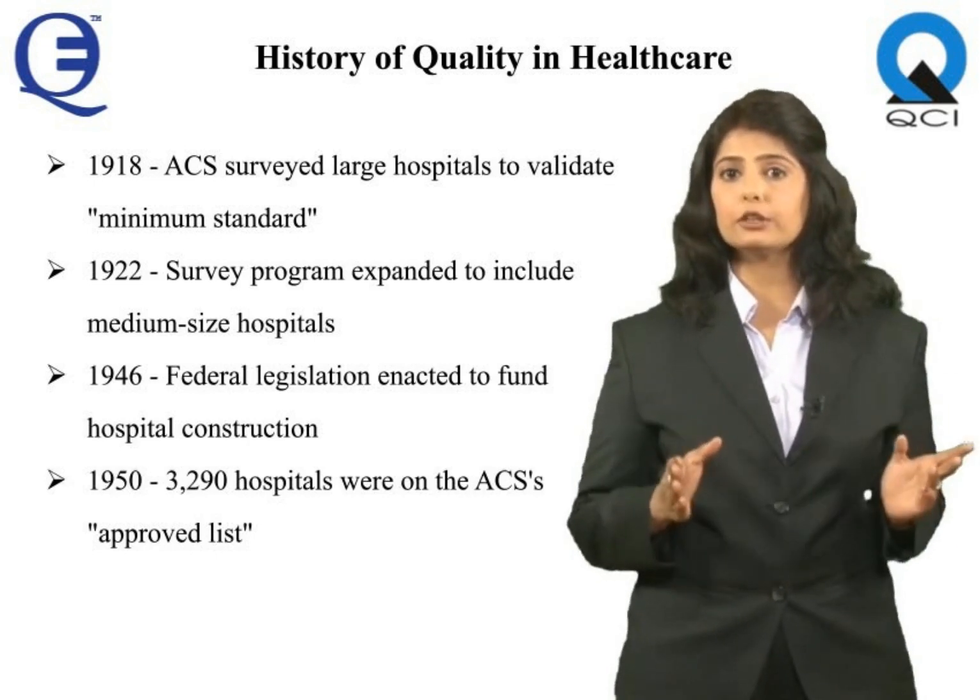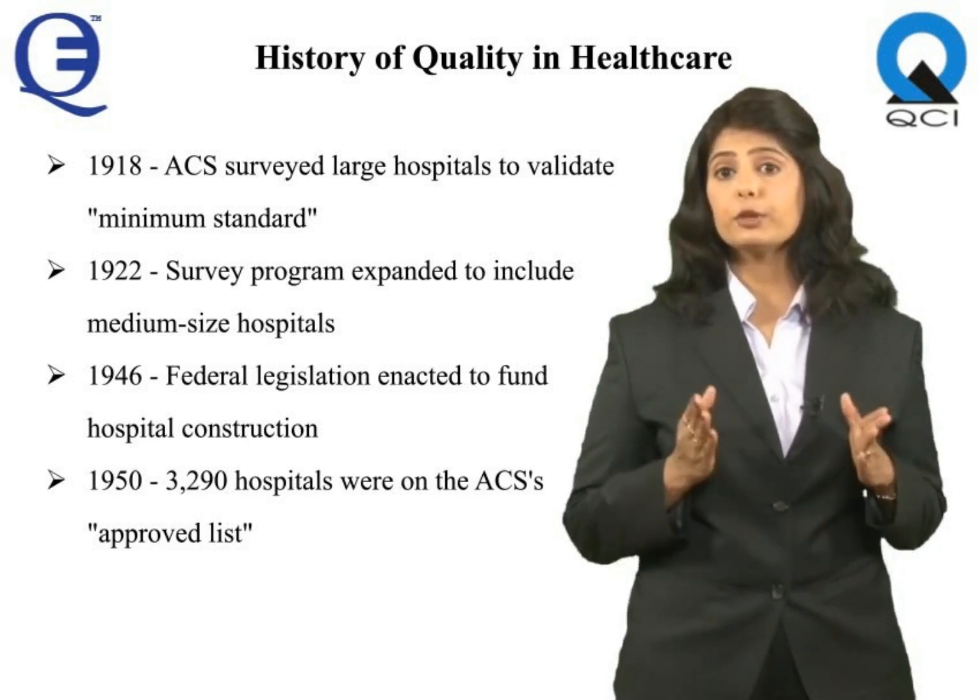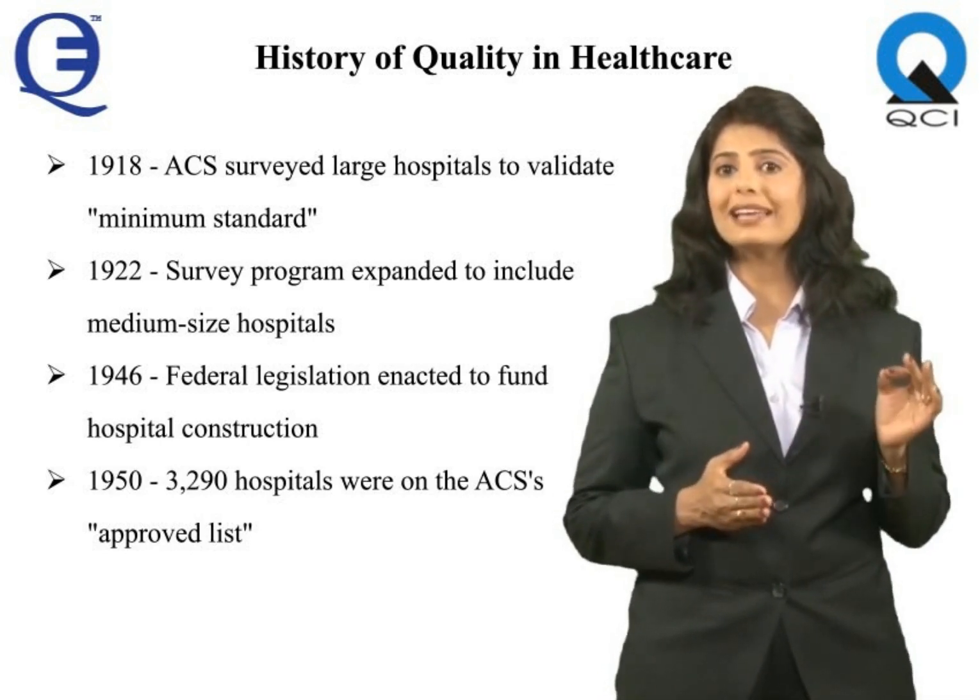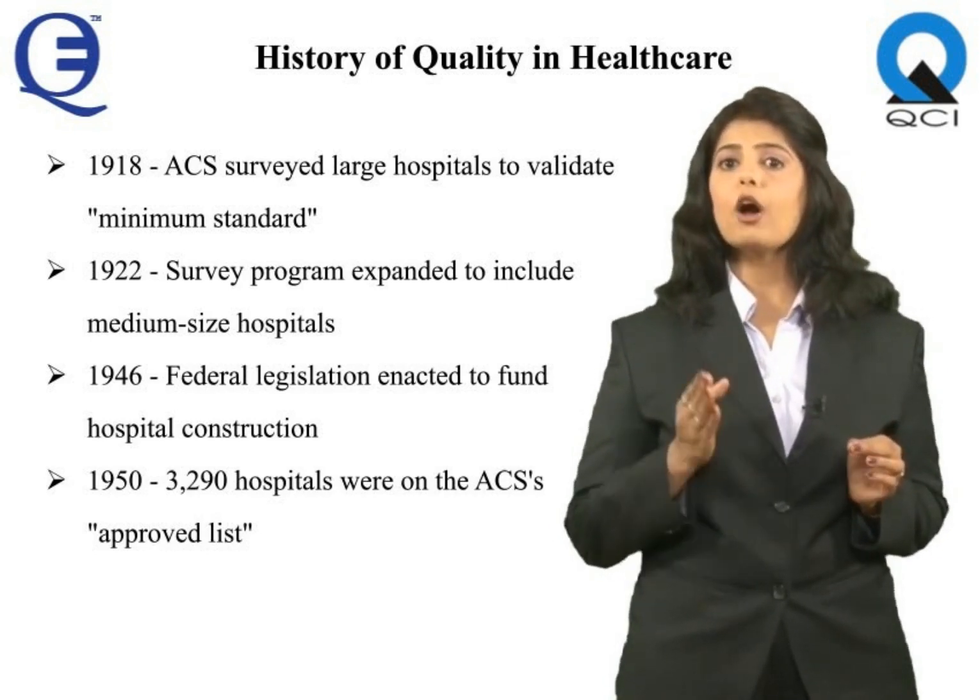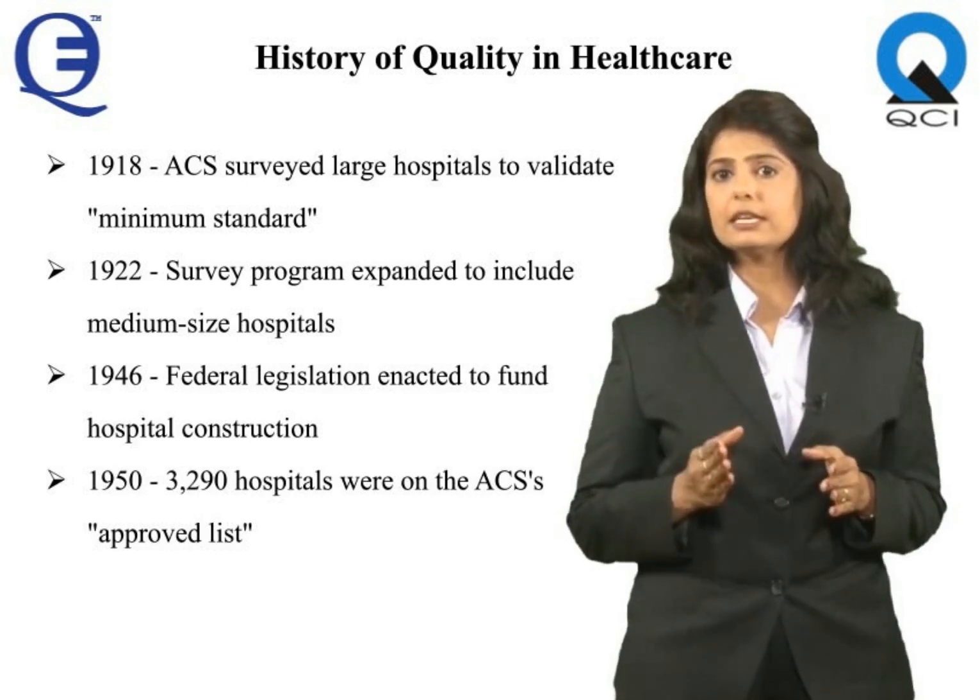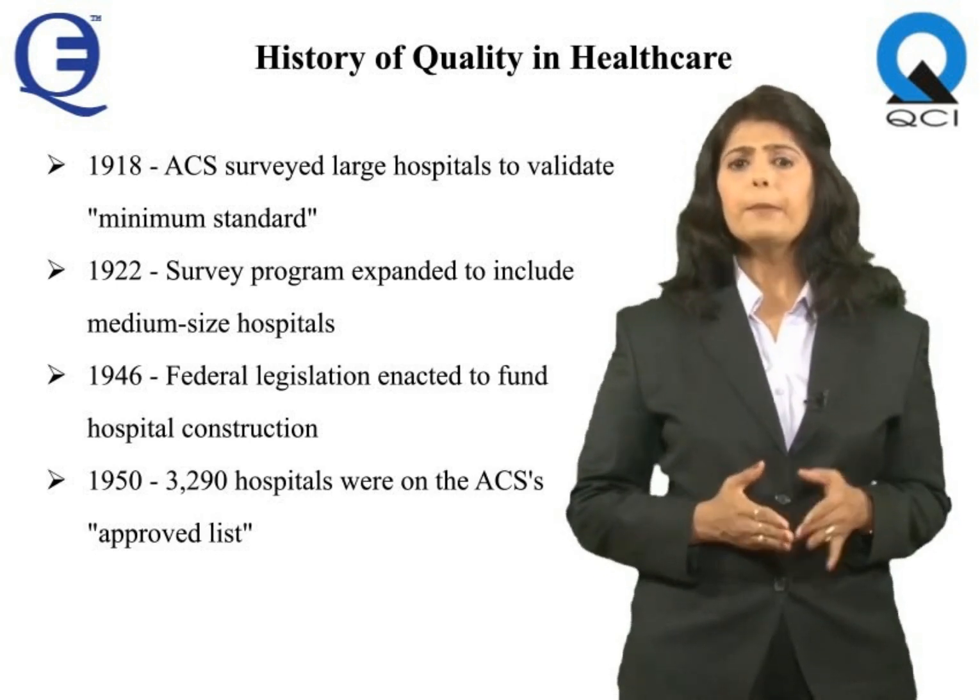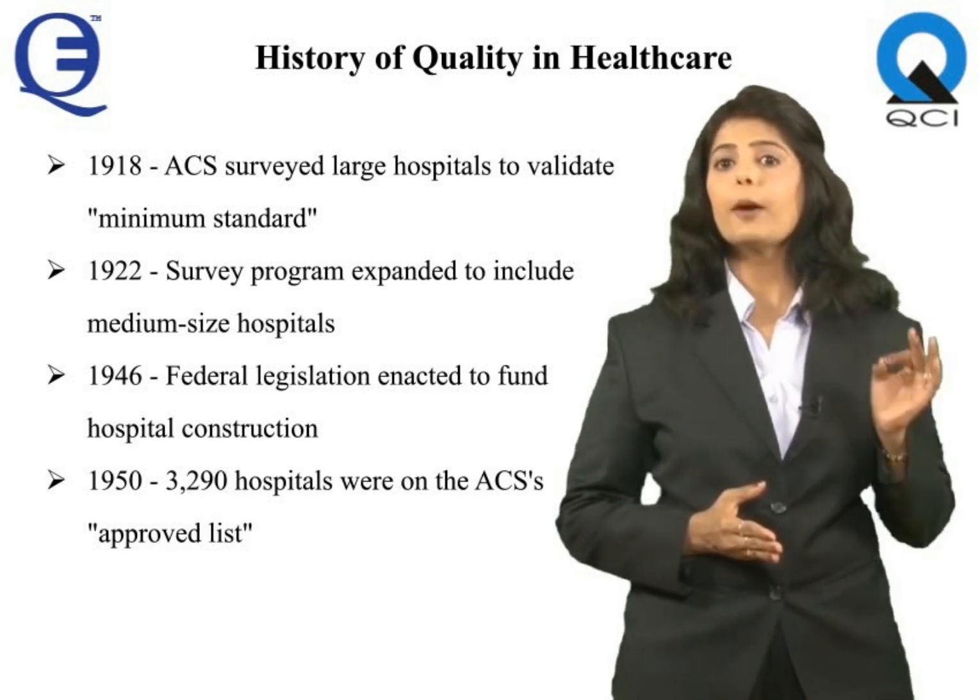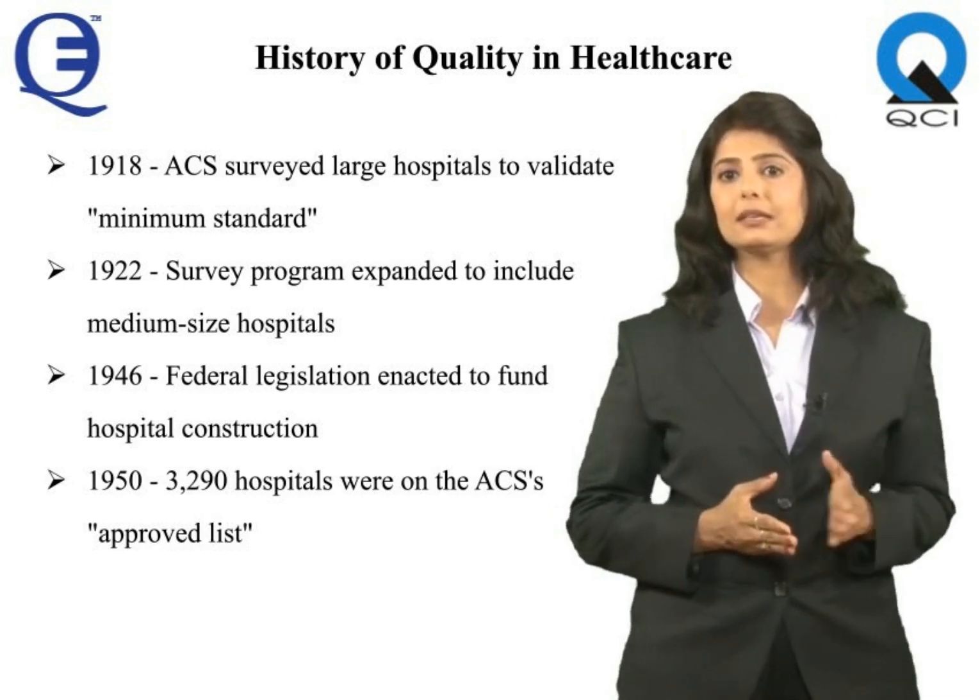Demands for the program grew markedly during the next decades, fueled by federal legislation enacted in 1946 to fund hospital construction. New facilities were being built in communities nationwide. By 1950, some 3,290 hospitals were on the ACS approved list, representing half the hospitals in United States.